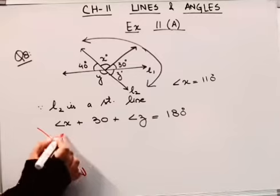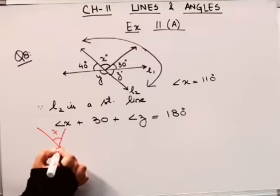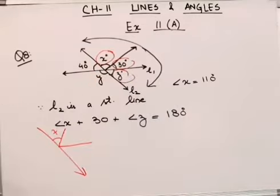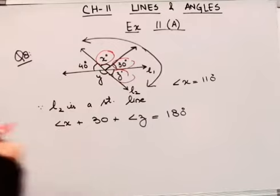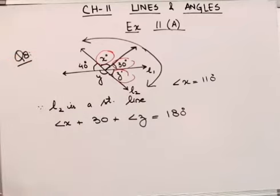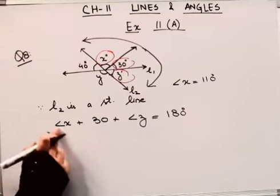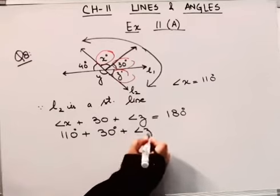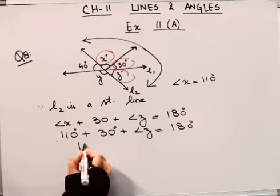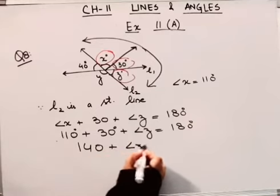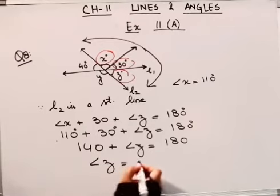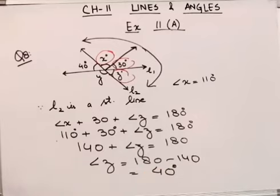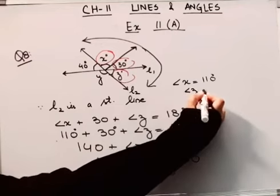This is L2 line. On it we have angle x, then we have 30, then we have z here. So these three sum to 180 degrees. We have found out x equals 110. So I'll write 110 plus 30 degrees plus angle z equals 180. The sum of these two is 140 plus angle z equals 180. So angle z will be 180 minus 140, this equals 40 degrees. So z is found out, angle z equals 40 degrees.